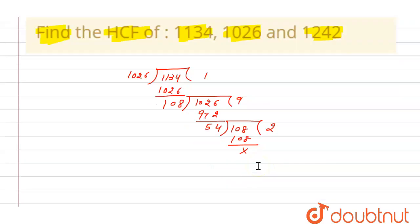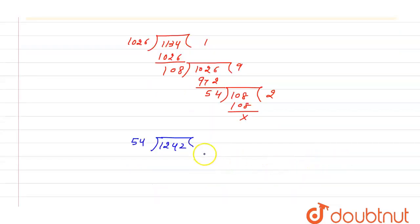Now we will divide the third number by 54. So 1242 will be divided by 54. So 54 into 2 will be 108. Here we will get 6 and here we will get 162.